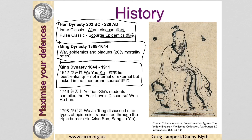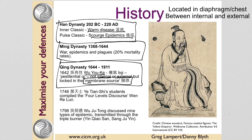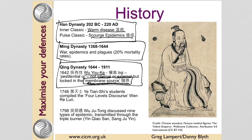Wu Youke talked about pestilential Qi and said it was neither internal nor external but was lodged in the Mu Yuan — the membrane source. He said when it got locked in the membrane source you couldn't really treat it directly; you waited until it became either an external or an internal condition, and then treated it. He devised a formula specifically for treating the membrane source.